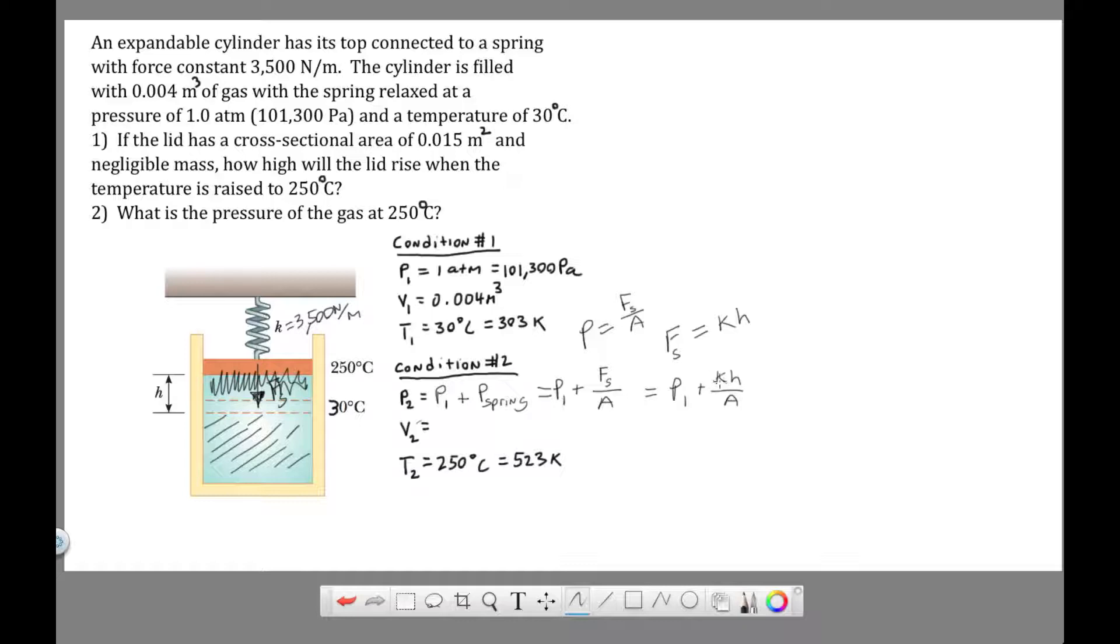So writing this one more time, P2 is going to be equal to P1 plus KH over A. We know K and we know A. We're given the area of the piston is 0.015 meters squared. So P1 is 101,300 pascals, K is 3,500 newtons per meter, H is what we're looking for, and A is 0.015 meters squared.